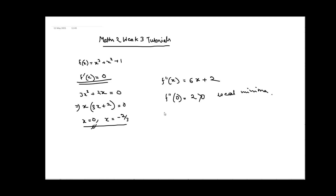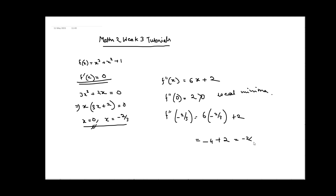If we put x = -2/3 into f''(x), we get 6(-2/3) + 2, which gives -4 + 2 = -2, which is less than 0. So x = -2/3 is a local maxima.